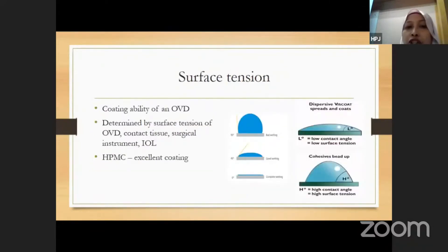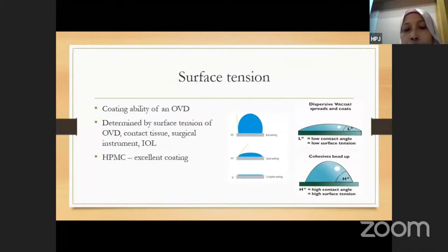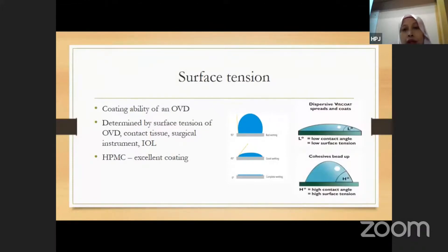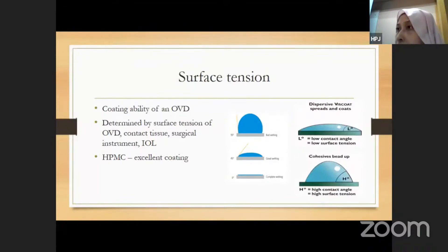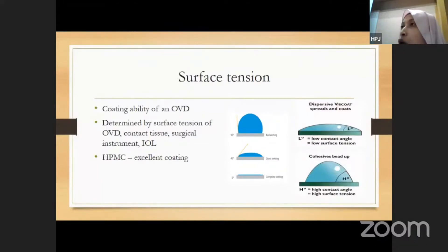Surface tension is the coating ability of an OVD. It is determined by the surface tension between the OVD, contact tissue, surgical instruments, and the IOL. For example, if you put Healon GV onto a cornea it appears as a blob of gel, whereas something more dispersive like HPMC or Arovi s coats the epithelium. The more dispersive the OVD, the lower the surface tension.